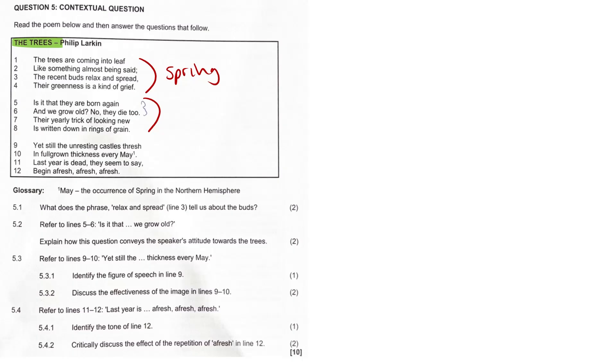Stanza two, the poet questions whether trees are truly reborn. He realizes that trees also die eventually, but their yearly renewal gives the illusion of immortality. The rings in their trunks mark the passage of time. As they grow older, they get these little rings just as wrinkles do for humans.